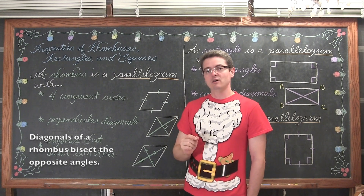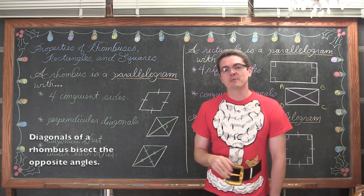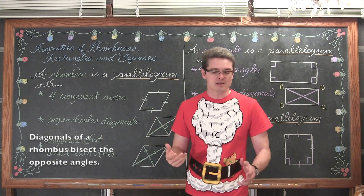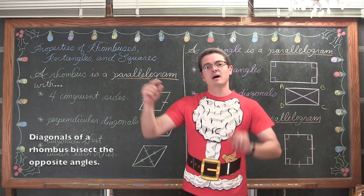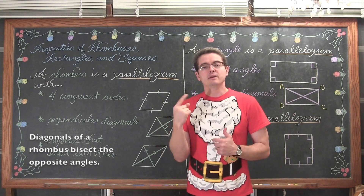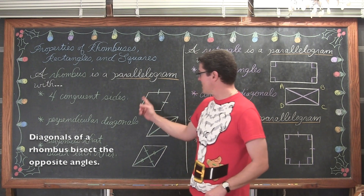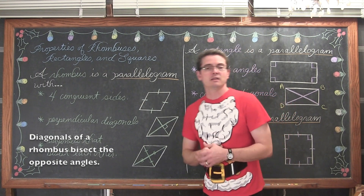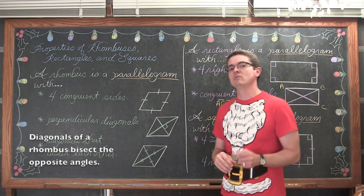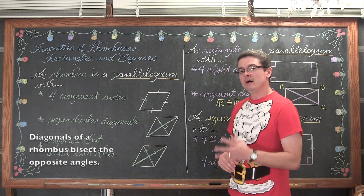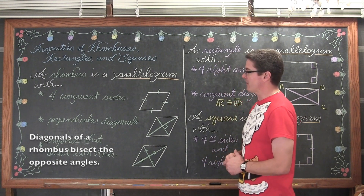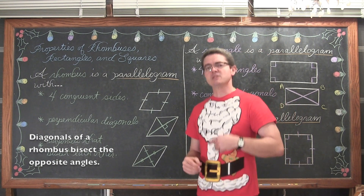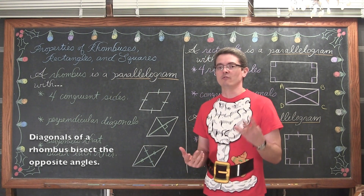Now these are types of parallelograms, so all the properties we just learned about parallelograms are still going to hold true, such as the diagonals bisect each other, the opposite angles are going to be congruent, but the consecutive interior angles are going to be supplementary and so on. Those properties from the last two videos are still going to hold true. But these are special types of parallelograms, just like a parallelogram is a special type of quadrilateral, a four-sided polygon.